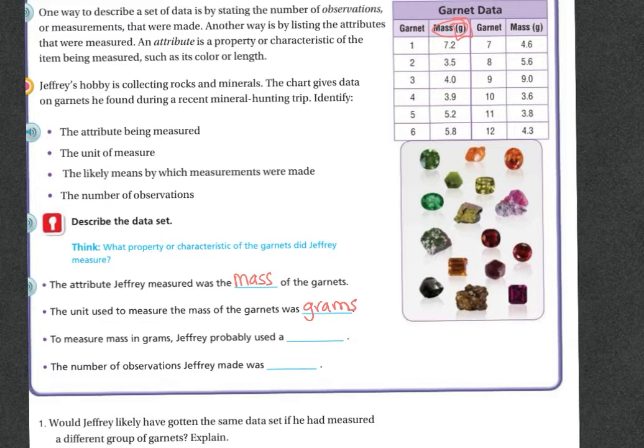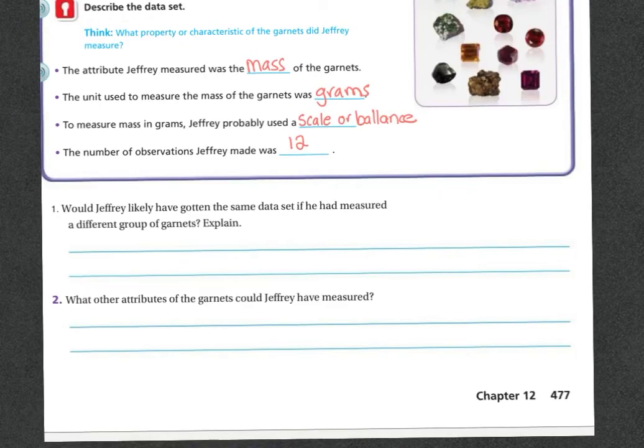To measure mass in grams, Jeffrey probably used a scale or a balance. The number of observations Jeffrey made was, well, we can look, 1 through 6, 7, up, right there, 12.